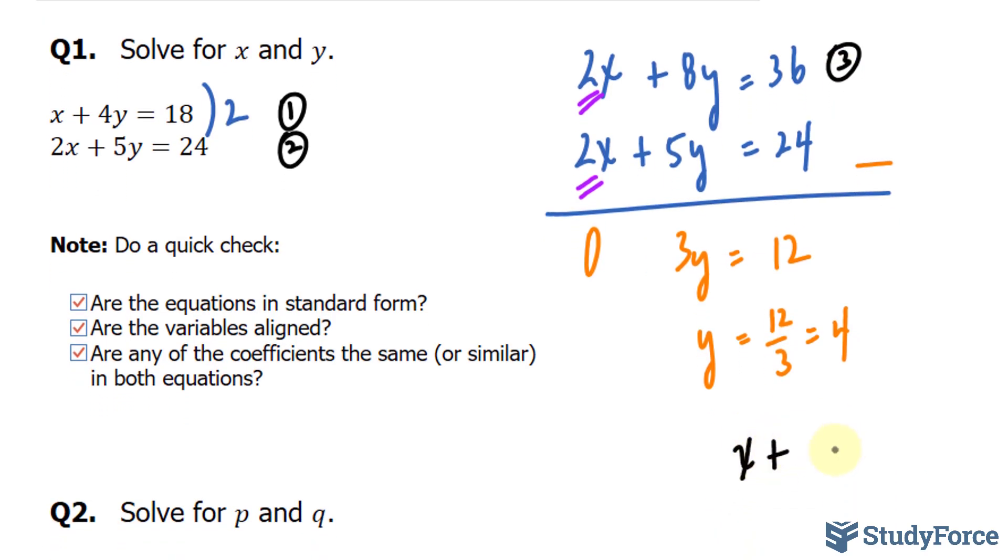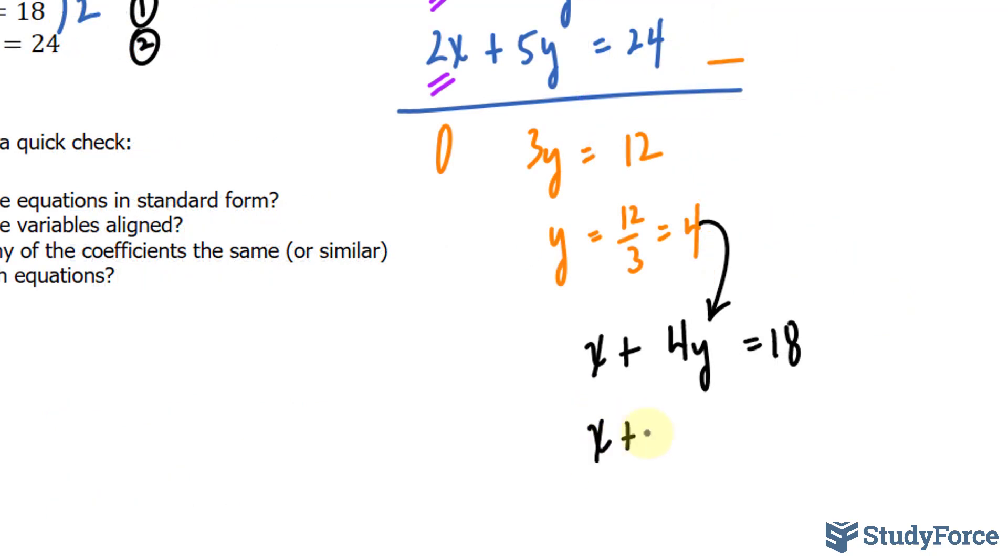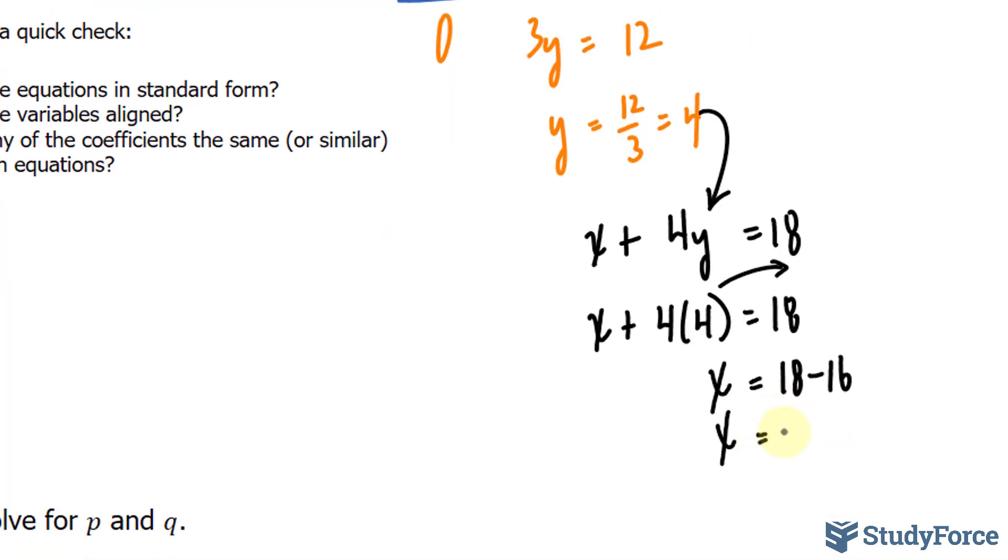I'll go ahead and substitute it into 1 because it seems to be the simplest to work with. However, whichever one you choose, you will end up with the same answer. So that is equation number 1, and I'm about to substitute this 4 into there. I have x plus 4 times 4 is equal to 18. 4 times 4 is 16, which I'll transfer over. 18 minus 16, and therefore we get an x value equal to 2.